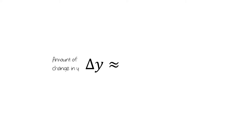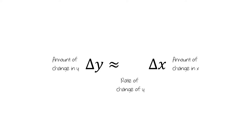If you have two quantities, x and y, that vary together, then the amount of change in y, which is represented by the symbol delta y, can be approximated by taking the amount of change in x, which is represented by the symbol delta x, and multiplying by the rate of change of y with respect to x, which is represented here by the symbol y prime.